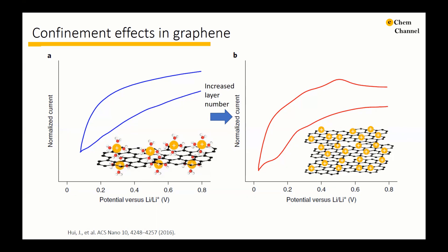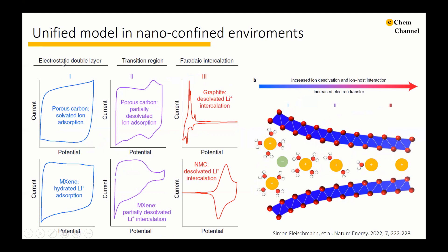Hence, it can be hypothesized that the transition between solvated lithium adsorption on a single graphene sheet and regular intercalation of desolvated lithium into graphite occurs with a continuous change in charge storage behavior, accompanied by changes in ion solvation, ion mobility, and electrochemical behavior. That is to say, there is a transition region from the electrical double layer to typical faradaic intercalation. It should be regarded as a continuous transition between the two determined mechanisms, governed by the extent of ion solvation and ion-host interaction. In this transition region, some pseudo-capacitive processes are observed. From electrical double layer to faradaic intercalation, an increasing degree of confinement is accompanied by a decreasing degree of ion solvation, which leads to an increased ion-host interaction.